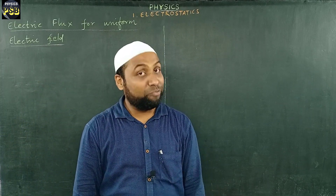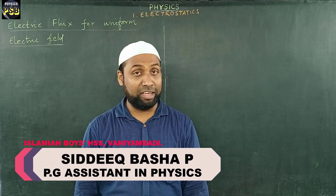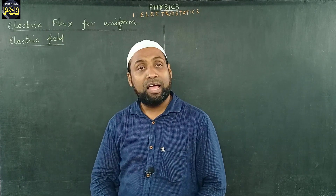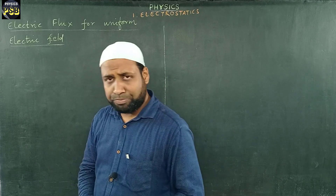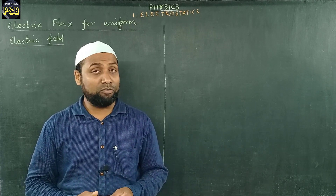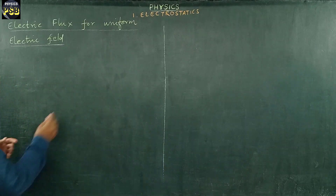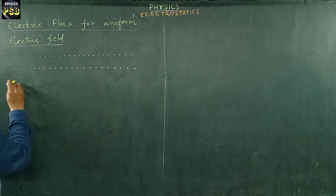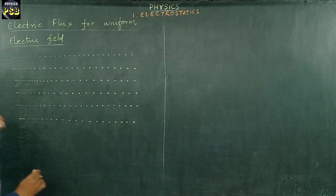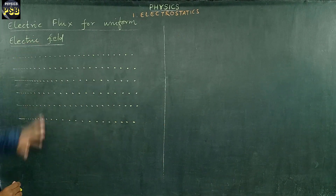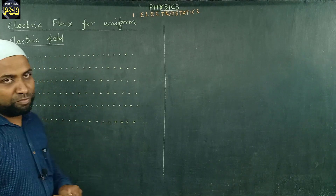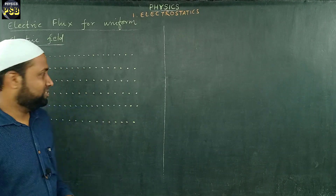Assalamu alaikum, hope you are doing fine. We know the number of electric field lines crossing a given area is referred to as electric flux. In this video we will discuss electric flux for a uniform electric field. Where there is charge, there is an electric field around it, consisting of electric field lines. When the electric field lines are parallel to each other, we call such an electric field a uniform electric field.